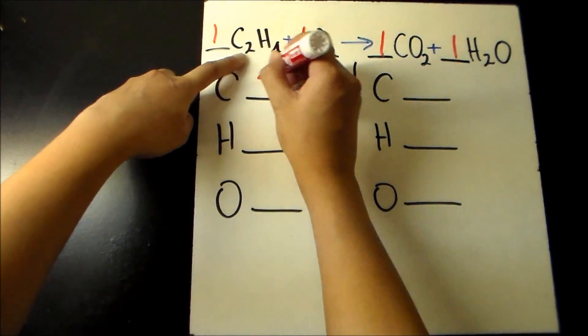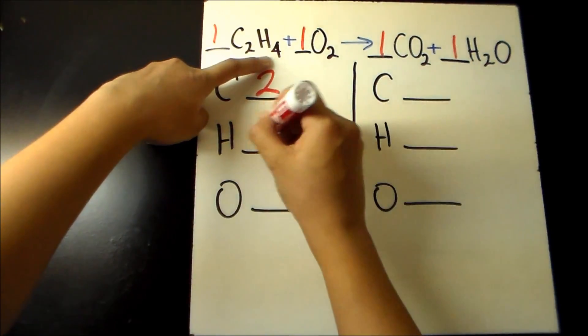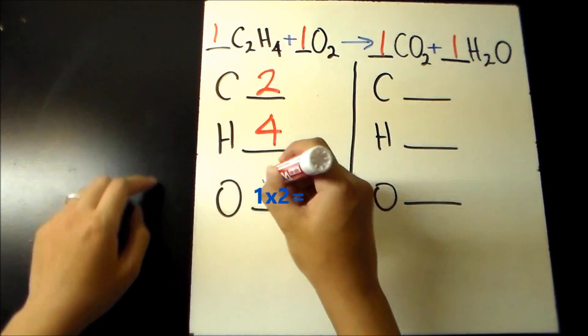On the reactant side, there are 1 times 2 equals 2 carbons, 1 times 4 equals 4 hydrogens, and 1 times 2 equals 2 oxygens.